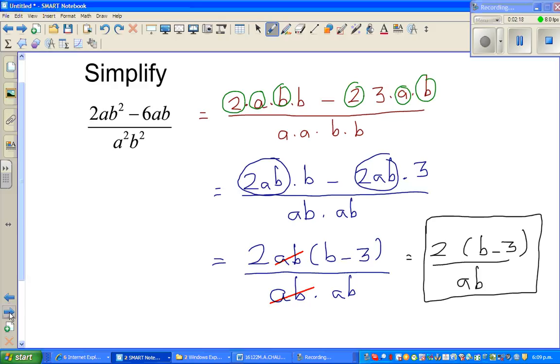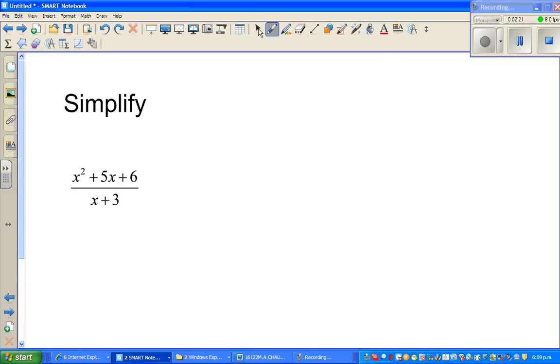This is an example of again simplifying rational expressions. You have a numerator which can be factorized. The simplest way of factorizing a quadratic is just put in two brackets. You want an x squared sitting here, so you can write an x times x here. Everything is plus, so you don't have to worry about the signs.